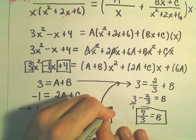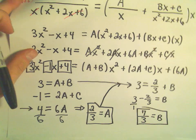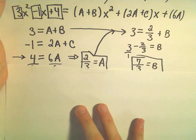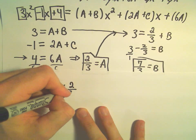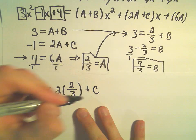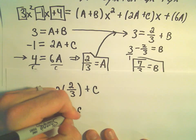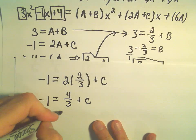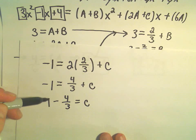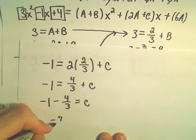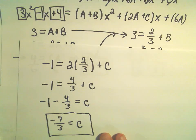Again, we've got our A value right here. Last but not least, I'm going to take my middle equation and solve for C. So we've got -1 equals 2 times A, which is 2/3, plus C. So we've got -1 equals 4/3 plus C. I can subtract 4/3 from both sides. So this is -3/3 - 4/3 would be -7/3. And now we've got our C value as well.